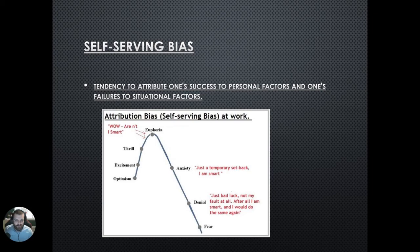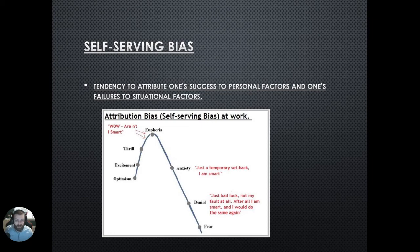A classic example: when you take the AP exam and get a five, you want to own that success — 'I'm a great test taker, it was all my studying, I'm a genius.' But if you bomb the exam and get a one, suddenly you might say your AP Psych teacher was really bad and didn't prepare you. So it goes from within the person to outside the person — you claim your successes but push your failures onto the environment or other situational factors.